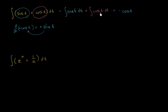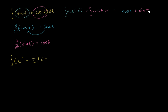What's the antiderivative of cosine of t? We already know that the derivative with respect to t of sine of t is equal to cosine of t. So cosine of t's antiderivative is just sine of t. Plus sine of t — and we're done. We found the antiderivative.